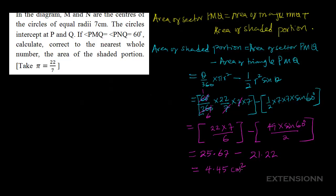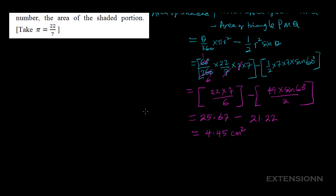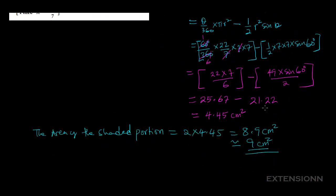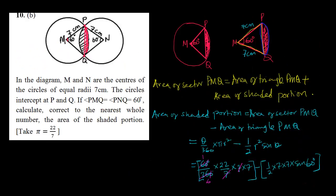This 4.45 cm² is the area of half of the shaded portion. The total area of the shaded portion equals 2 × 4.45 = 8.9 cm², which approximates to 9 cm² to the nearest whole number.